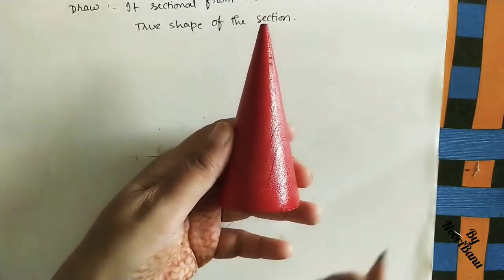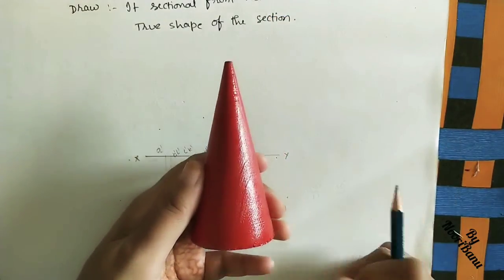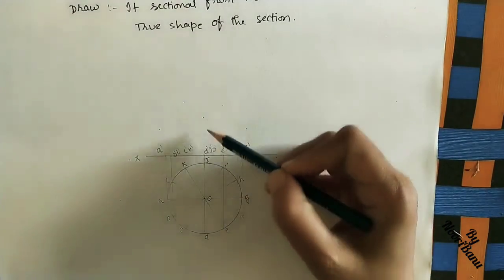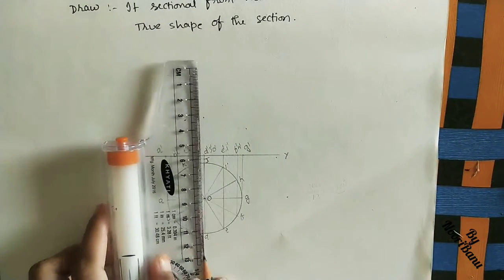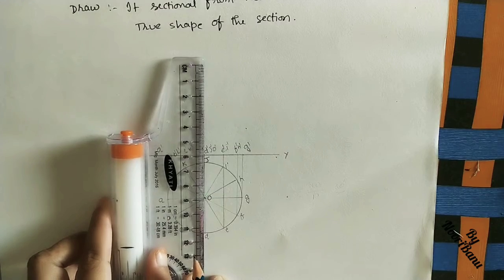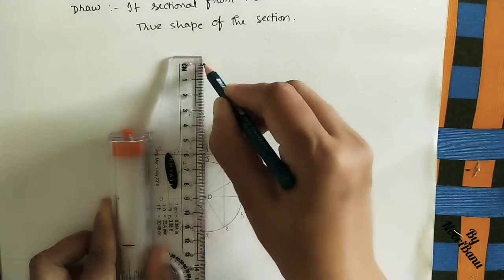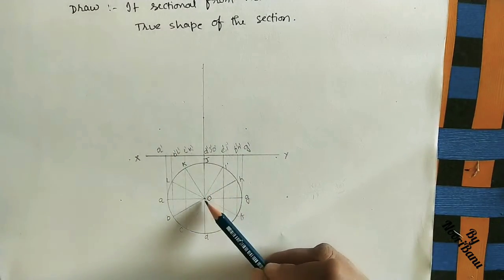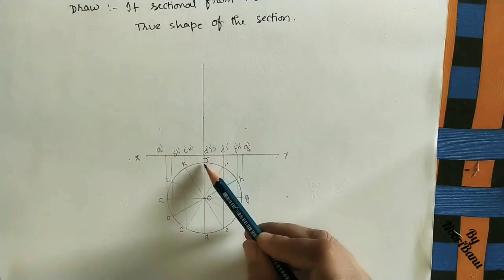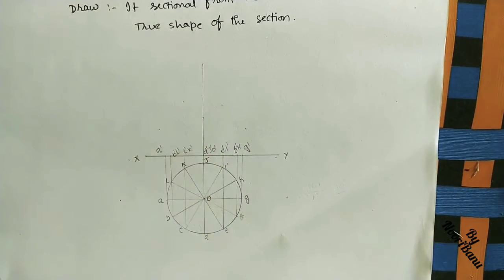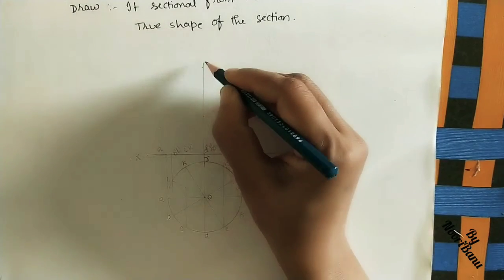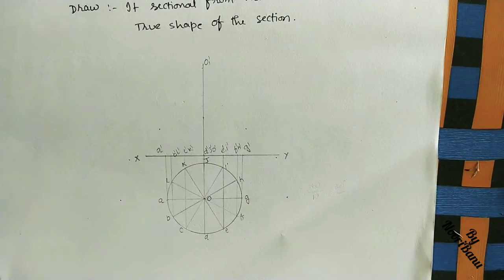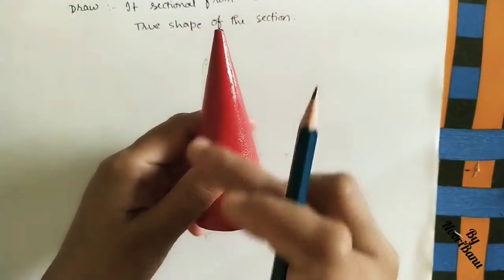In the front view we can see the triangular shape and the entire height of 60 mm. The center line is the axis line. Take 6 cm height on this line, mark the endpoint, and draw the line. This is the apex, marked O1 dash. Join all these points to the apex — these are the slant edges.